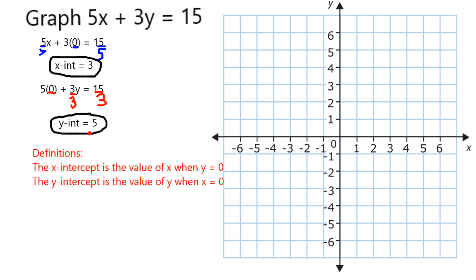I know where it crosses the x-axis and the y-axis, so I'm going to graph those points. This graph crosses the x-axis at 3 and the y-axis at 5. I have two points on my line, which is sufficient to determine the entire line. I'll connect those points, and this line represents the solution set to my original equation.